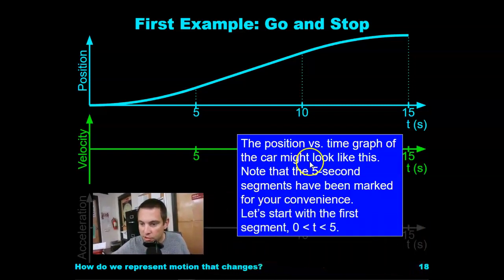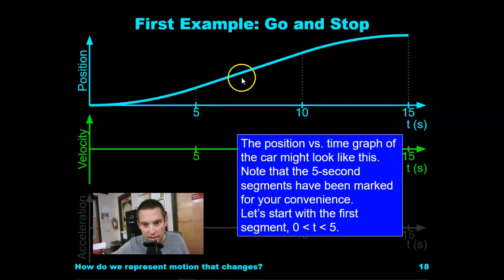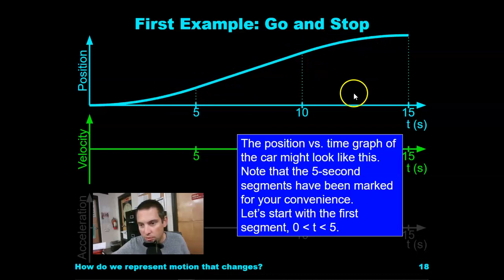The position versus time graph of the car might look like this. Note the five second segments have been marked for your convenience. So for the first five seconds we were speeding up, the next five seconds we had constant speed, and the next five seconds we came to a stop.